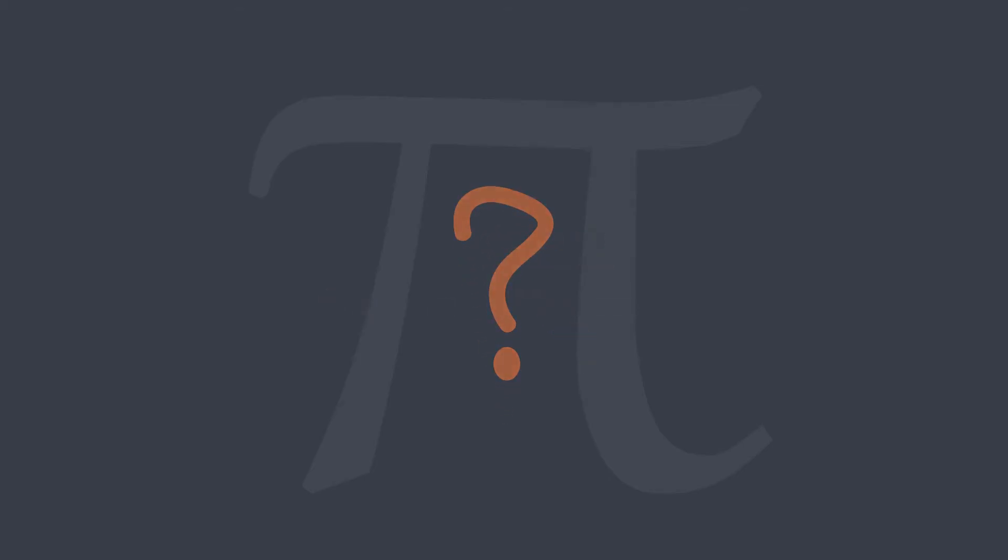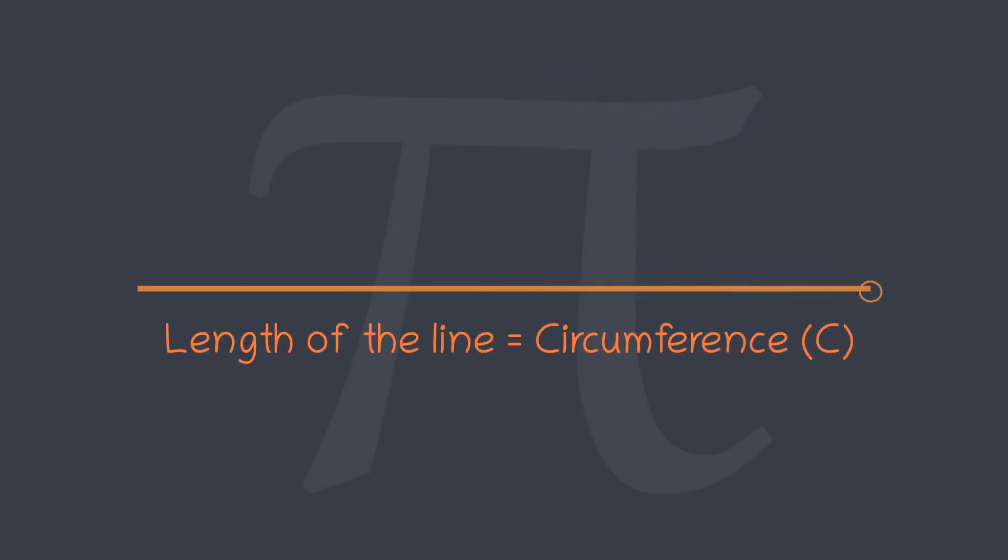Let's see how. Let's first unfold a circle of diameter d into a line. Its length will be same as the circumference which we call c.